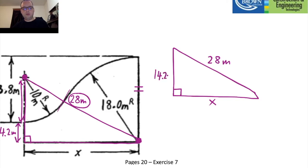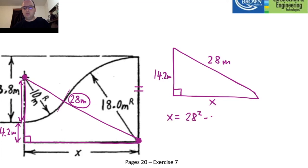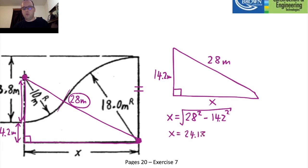x is not the longest side, so x = √(28² − 14.2²) = 24.13 meters. That's it for the questions I'm going to cover with you.